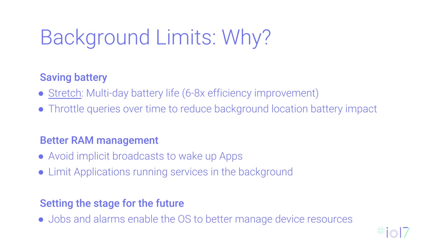So, background limits — why? We're trying to do two things. One is to save battery, largely around the limits we put in place for location. The goal is multi-day battery life, which will take a while, but that's where we're trying to go. It's a nearly 6% to 8% efficiency improvement from where we are today. The other part is about RAM management — working on how broadcasts are being fired to applications and how applications are running in the background with long-running services.